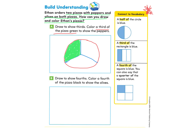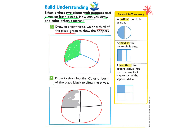Great job. Now let's look at part B: Draw to show fourths and color a fourth of the pizza black to show the olives. Fourths means four equal parts. We draw the pizza, then make one line from top to bottom and one line directly across — now we have fourths: one, two, three, four. We color one section black to show a fourth of the pizza. One of these fourths we colored black.